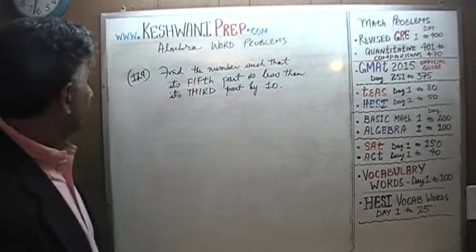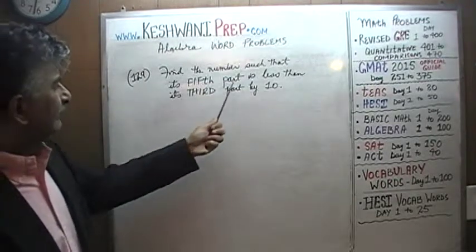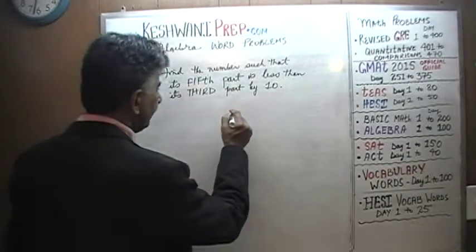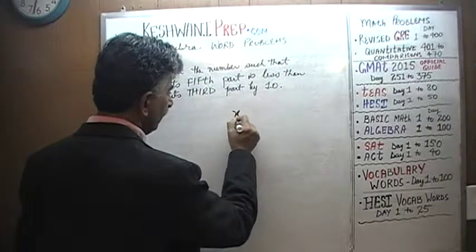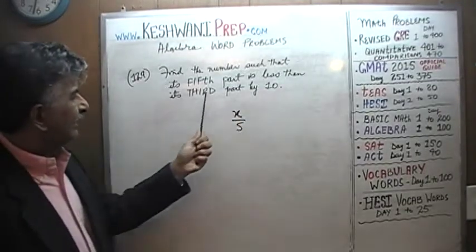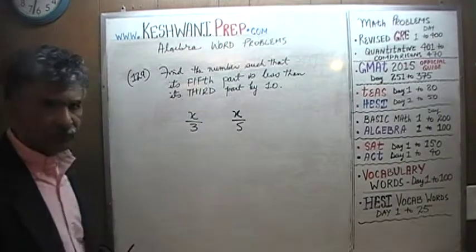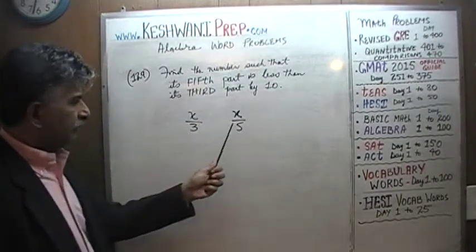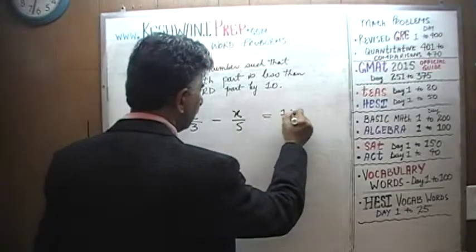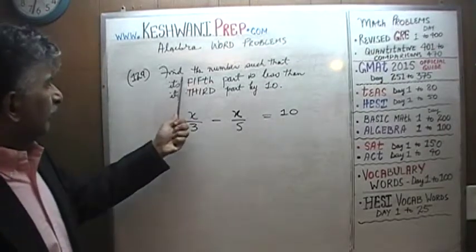Let's take a look at it. It says: find a number such that its fifth part is less than its third part by 10. So if you take the fifth of the number — let's call it X — we're told this quantity is less than the third part by 10. The difference between the third of the number and the fifth of the number has to equal 10.